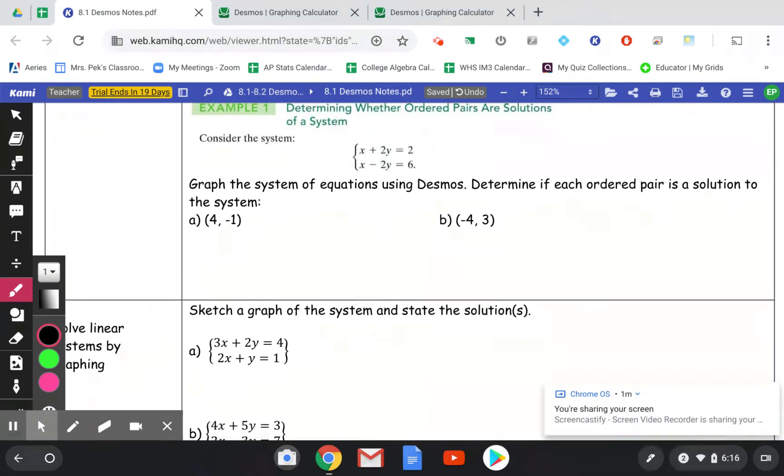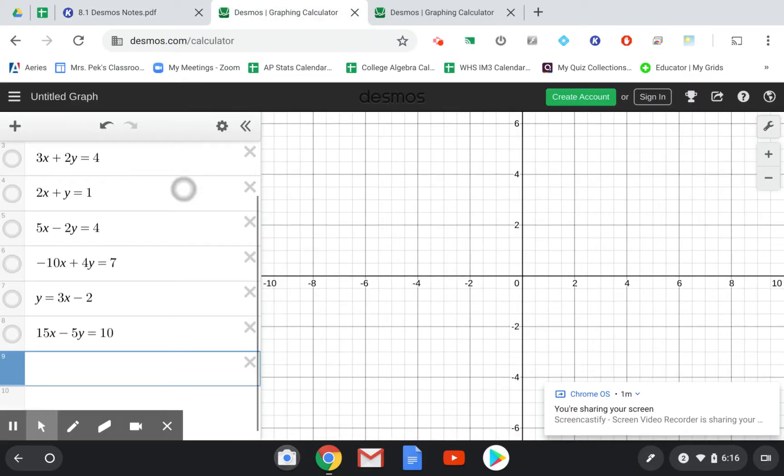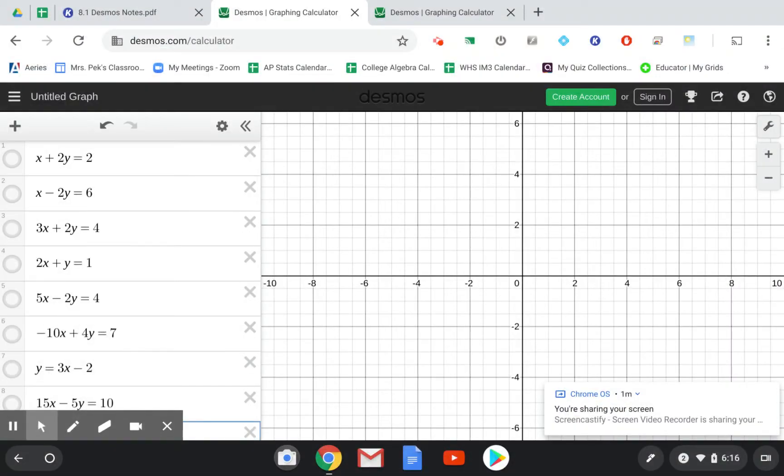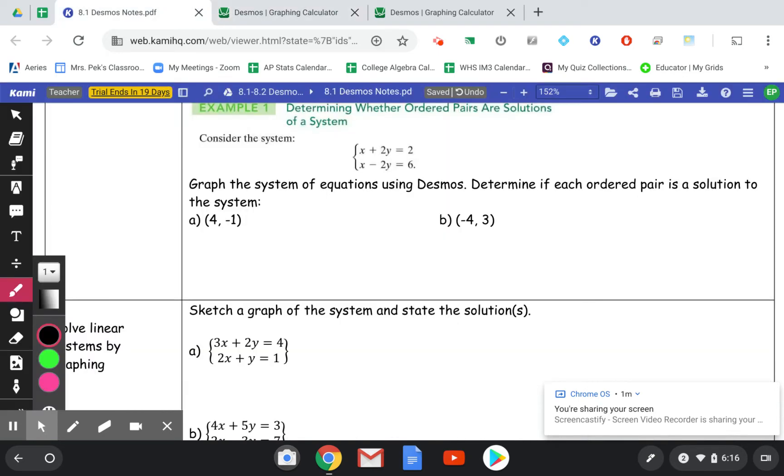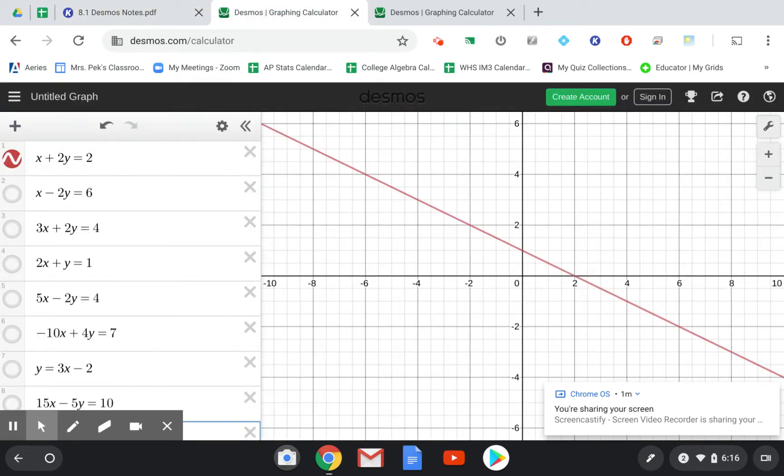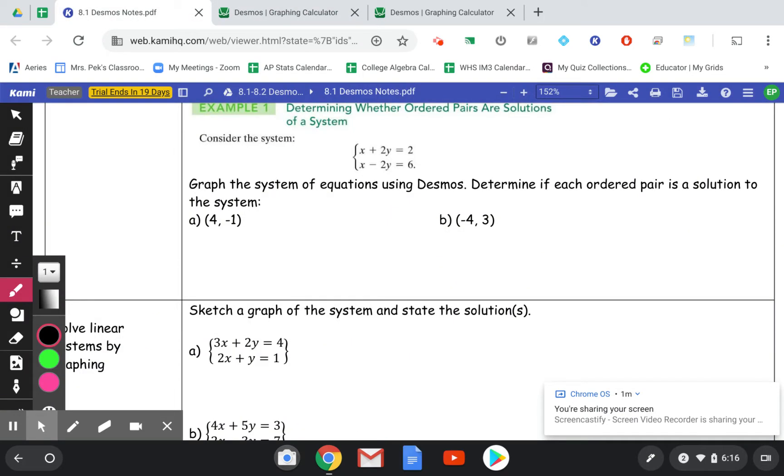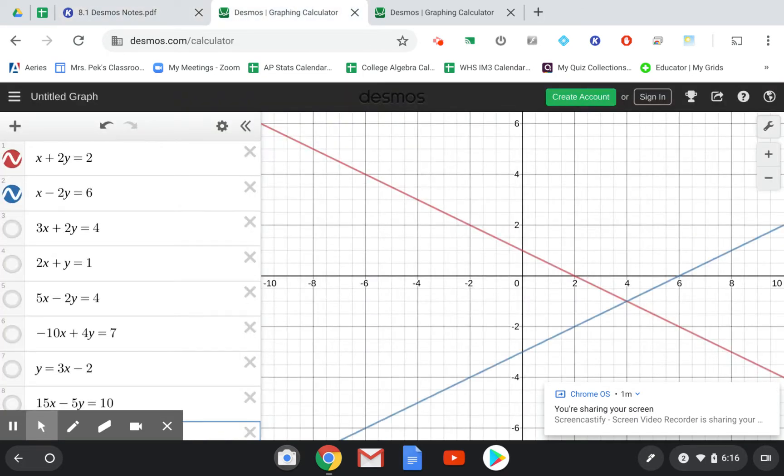So here we have consider this system, we have two equations. What I want you to do is go to Desmos, type those equations in here, and I've already pre-typed them to save us some time. So if I turn on the first one, which is x plus 2y equals 2, it gives me that one. And the second equation, x minus 2y equals 6, gives me that.